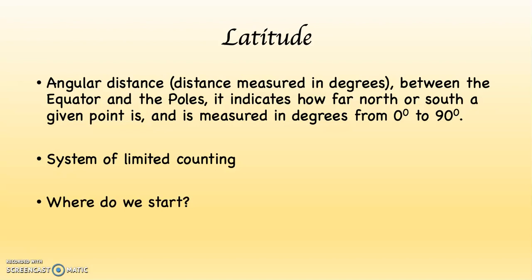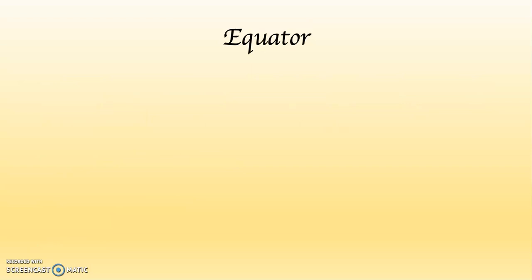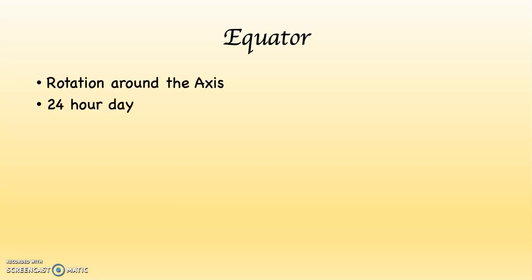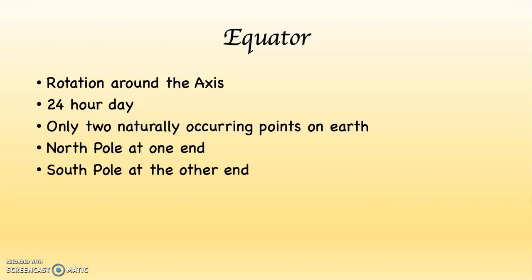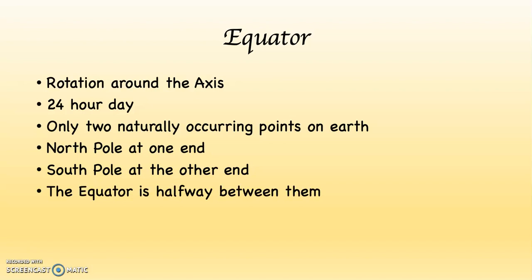If we have a system of counting, where do we begin? Let's start at zero. Zero, of course, is the equator. The Earth rotates around its axis, which is what gives us our 24-hour day. That rotation from west to east also gives us our two naturally occurring points: the North Pole at one end of the axis, and the South Pole at the other. The equator is found halfway between them. We could have put the North Pole as the starting point, but we split the difference and put the equator right in the middle, halfway between the North and South Poles. That's where we begin counting with latitude.